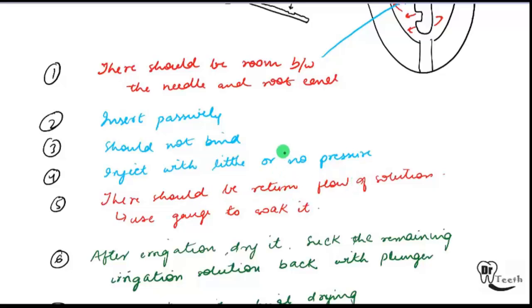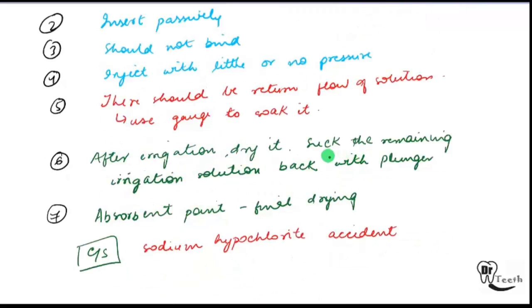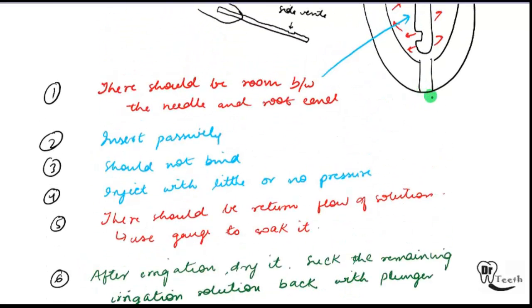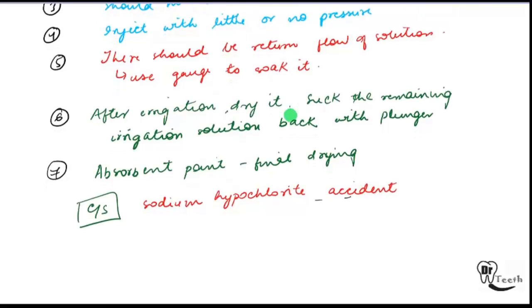The solution will return towards the coronal aspect and you have to use a gauze to soak the solution. After irrigation, dry it and suck the remaining solution. Final drying is done with absorbent paper. The clinical significance is the sodium hypochlorite accident, which occurs when you accidentally apply a lot of pressure and inject the solution downward into the vital area. Since hypochlorite is toxic, it causes toxicity and damage across the area.